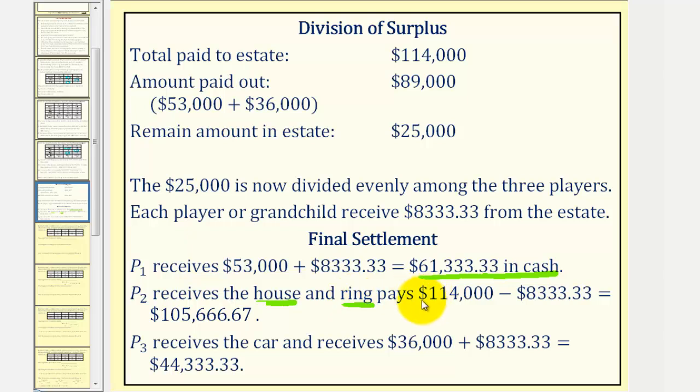Remember, initially they paid $114,000, but player two did receive this amount of cash back. And then finally, player three received the car and $44,333.33 of cash. Again, $36,000 plus the extra cash.